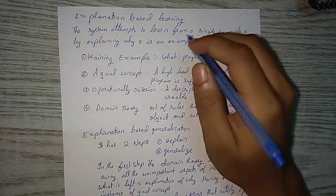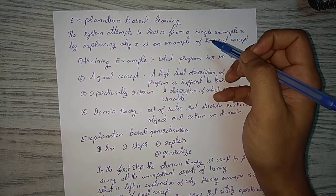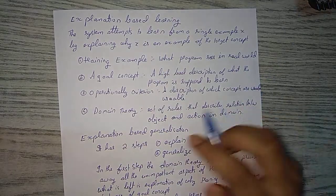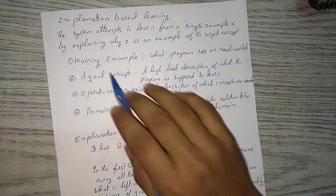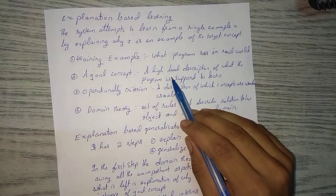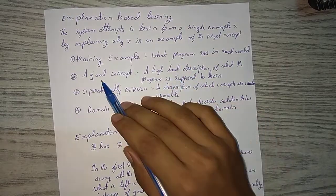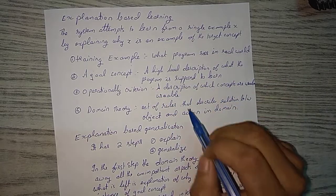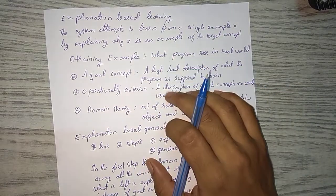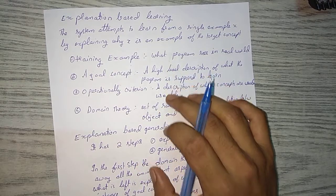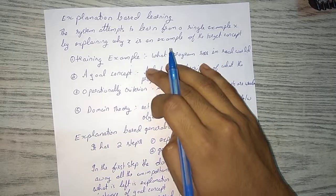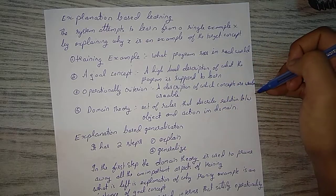In explanation-based learning we have a training example — a situation where the training concept is applied, i.e., what the program sees in the real world. Next is the goal concept: a high-level description of what the program is supposed to learn, meaning what you want as output from that training example. Next is operational criteria: a description of which concepts are usable, so you know which concept to apply to get from training example to a goal concept.